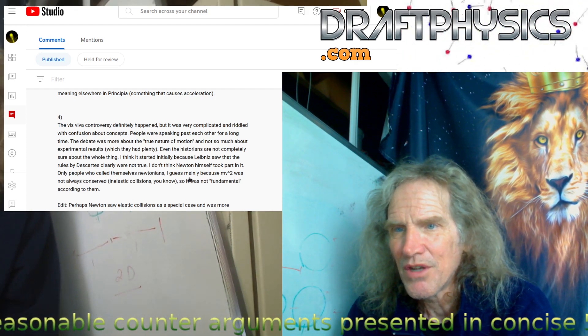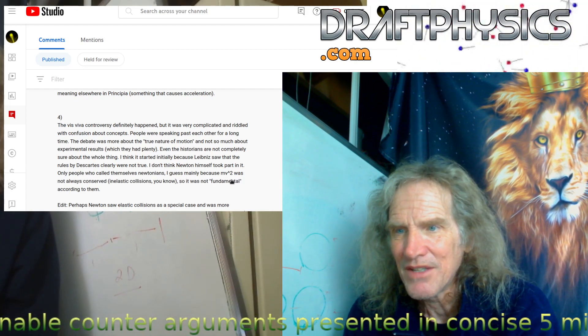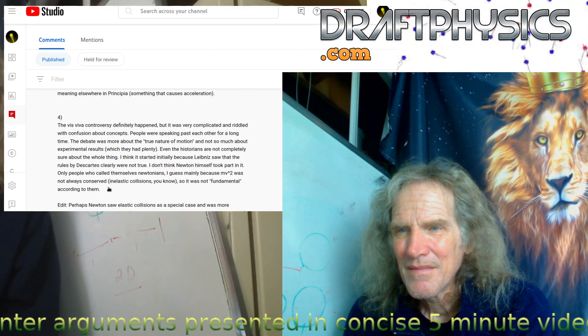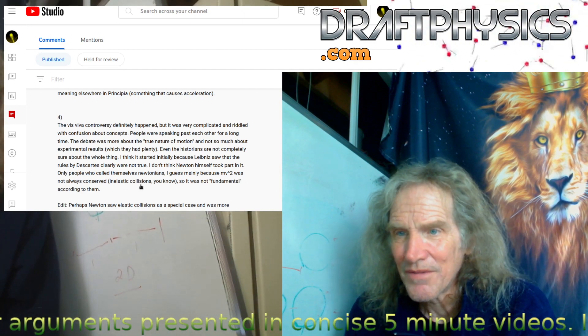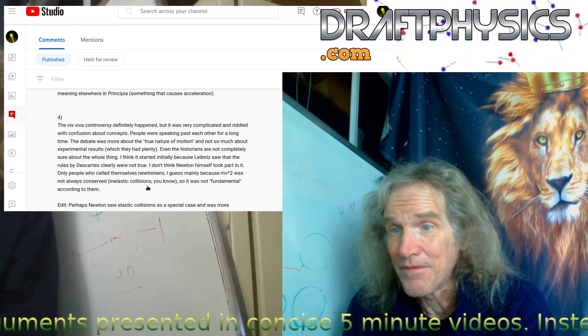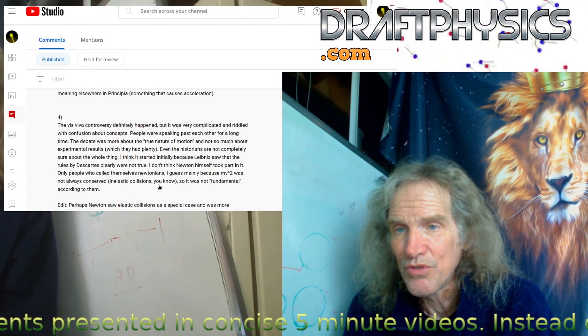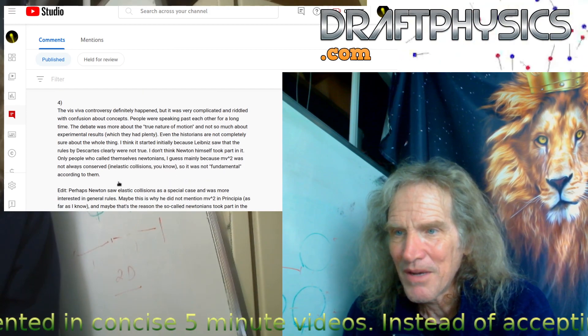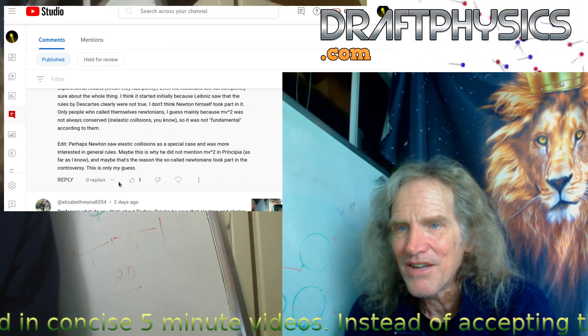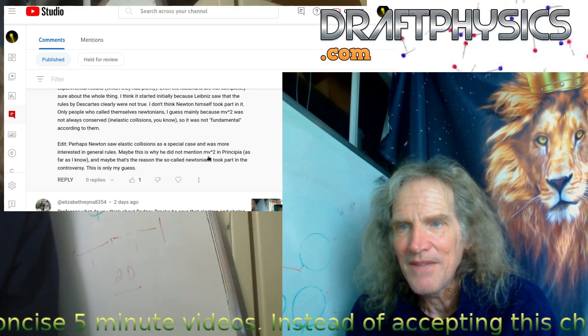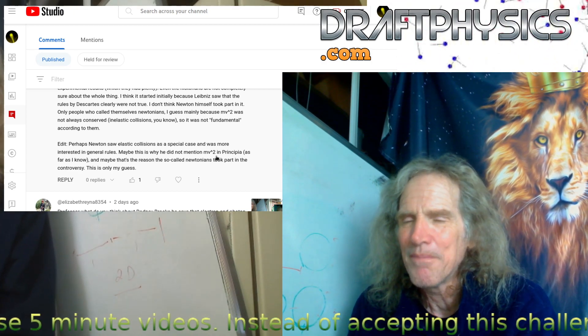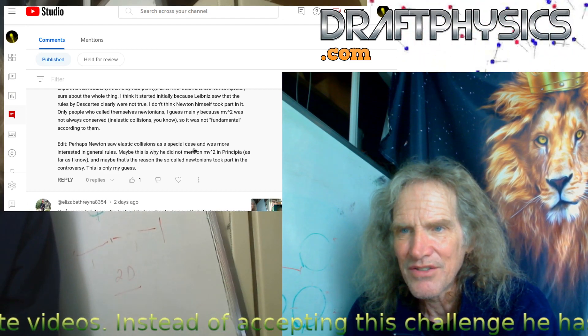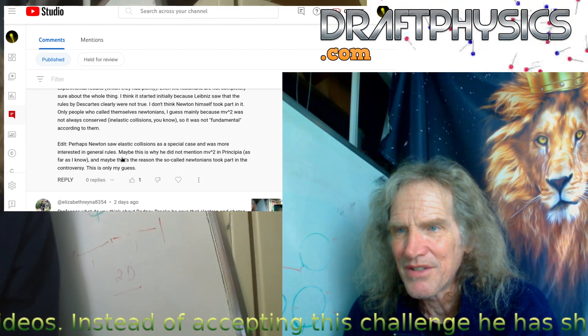People called themselves Newtonians mainly because MV squared was not always conserved. It's not ever conserved. In every single collision that you have two different size objects, two different weights, you're not going to conserve it. So it was not fundamental according to them. It's clear there's a clear obvious distinction: MV versus MV squared. How can you get more simple in terms of a controversy?